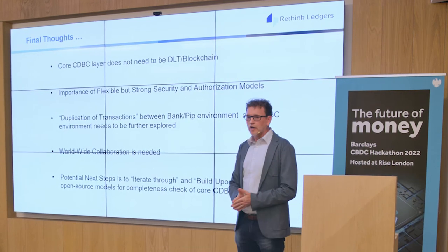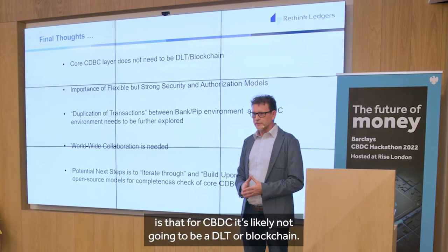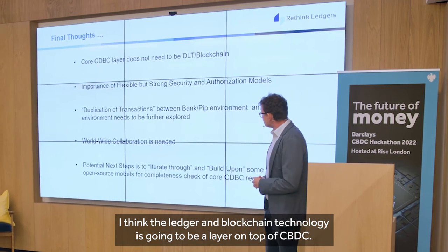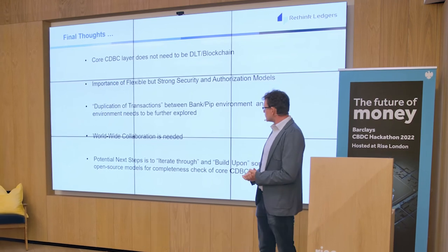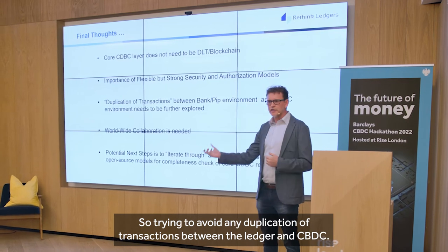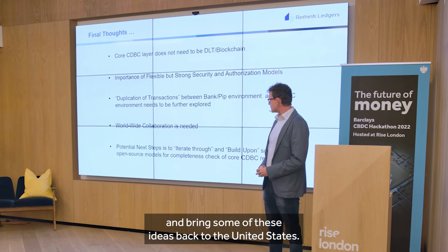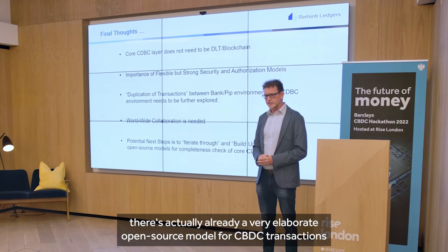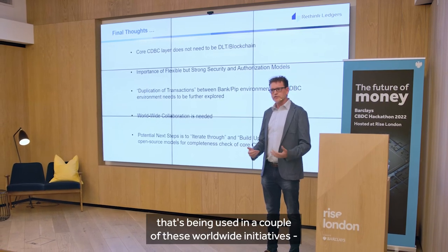So what are our final thoughts? One key takeaway from the Digital Pound UK initiative is that core CBDC is likely not going to be a DLT or blockchain — we completely agree with that. Ledger and blockchain technology is going to be a layer on top of the CBDC. We think it's very important that there are strong security and authorization models. We want to ensure end-to-end transaction integrity to avoid any duplication between the ledger and CBDC. We encourage worldwide collaboration — that's why we're here. There is already a very collaborative open-source model for CBDC transactions, and we propose that others work with us to iterate through that model being used in several worldwide initiatives.